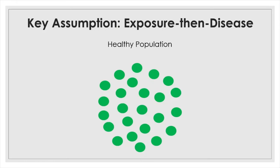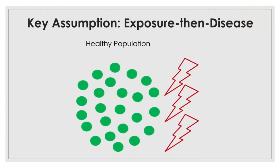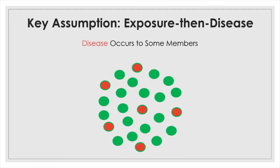Let's illustrate this exposure-then-disease assumption. Here is a healthy population at time zero. This population is then exposed to some or all of the risk factors. Typically, there can be multiple factors contributing to the occurrence of a disease instead of a single definitive cause. Then sometime later, a disease may or may not occur.